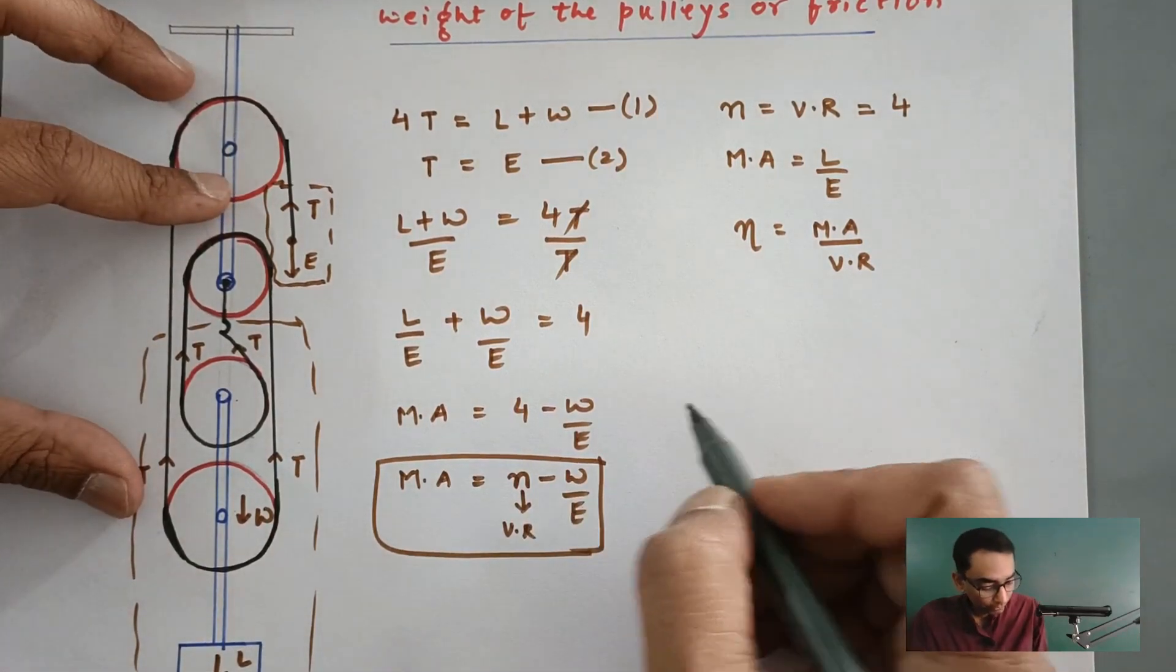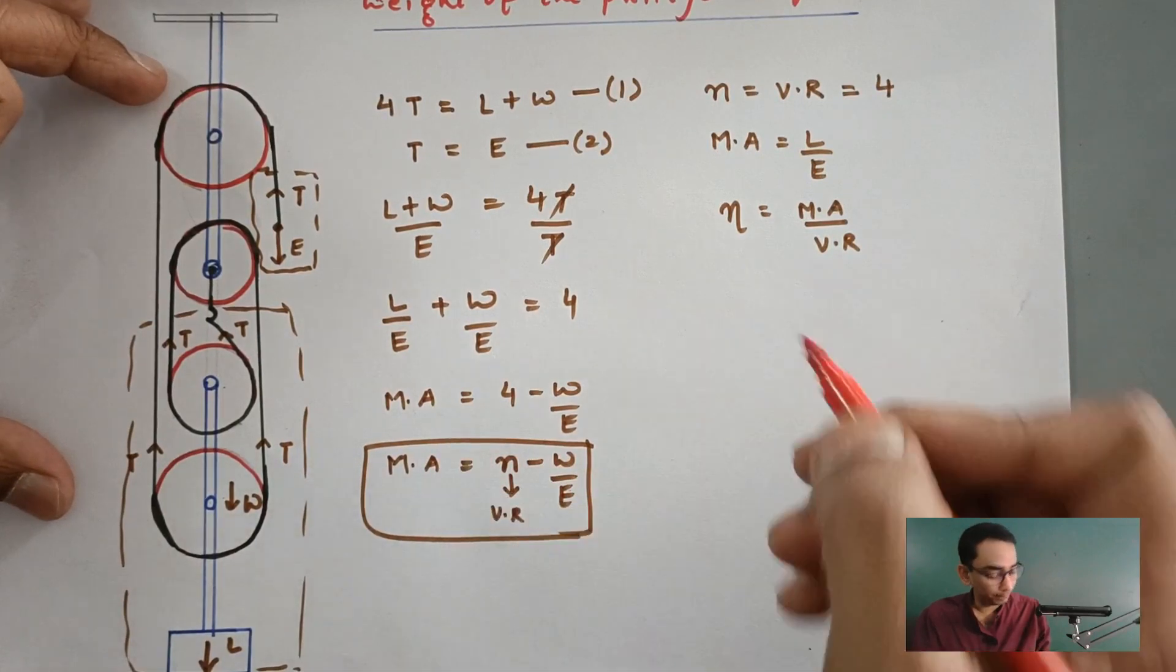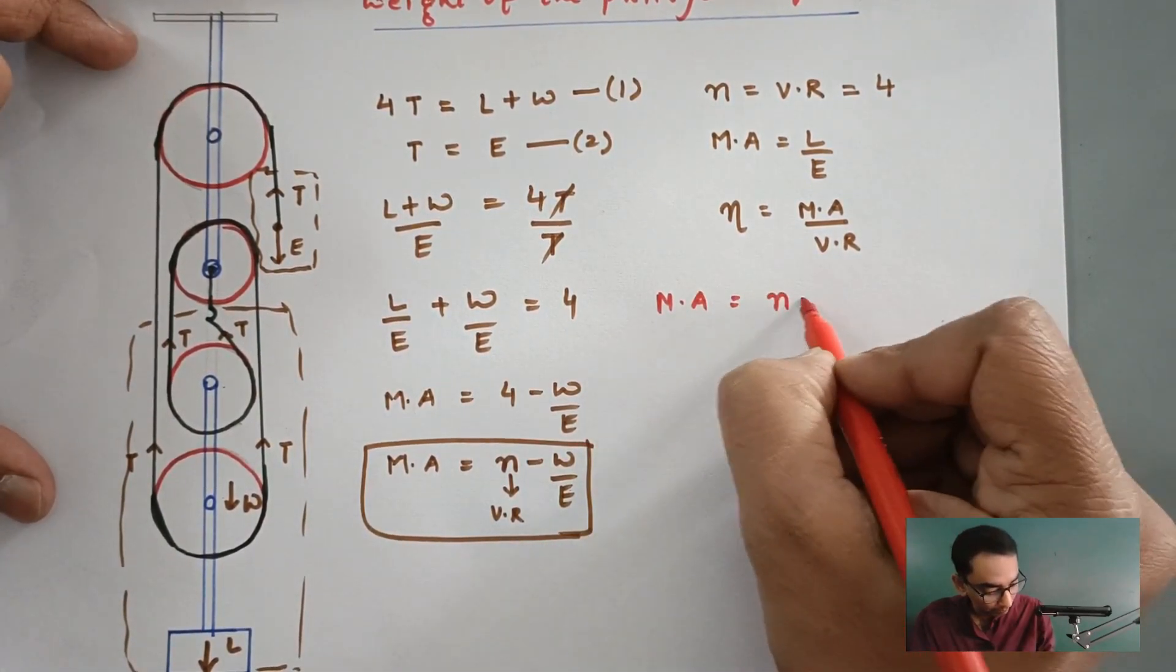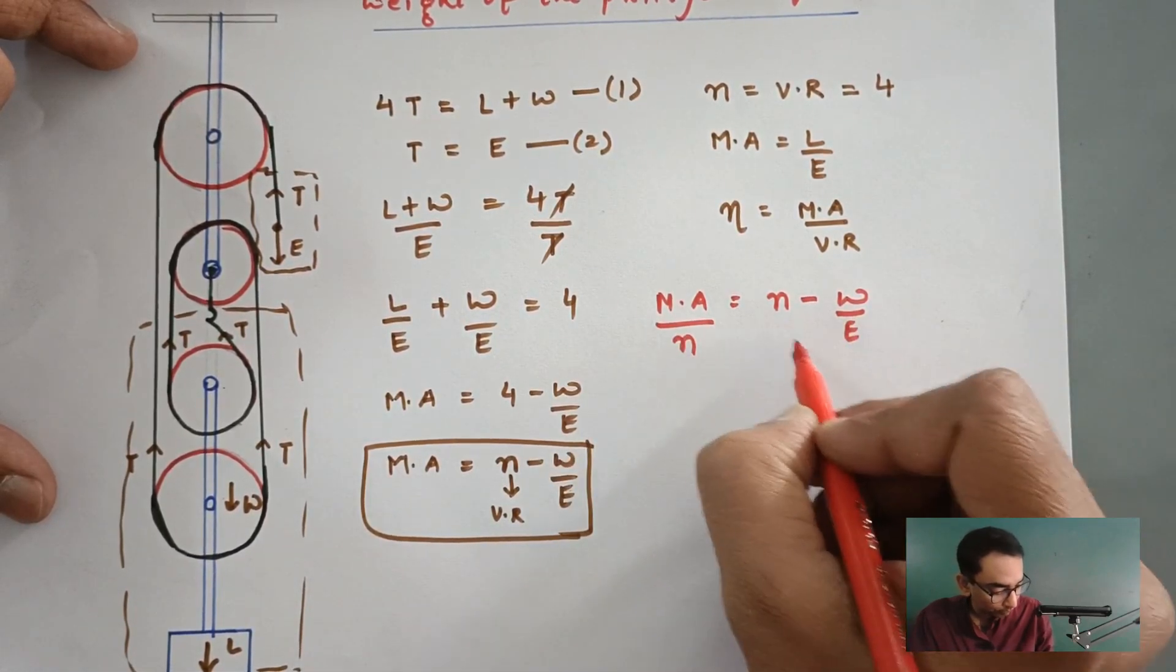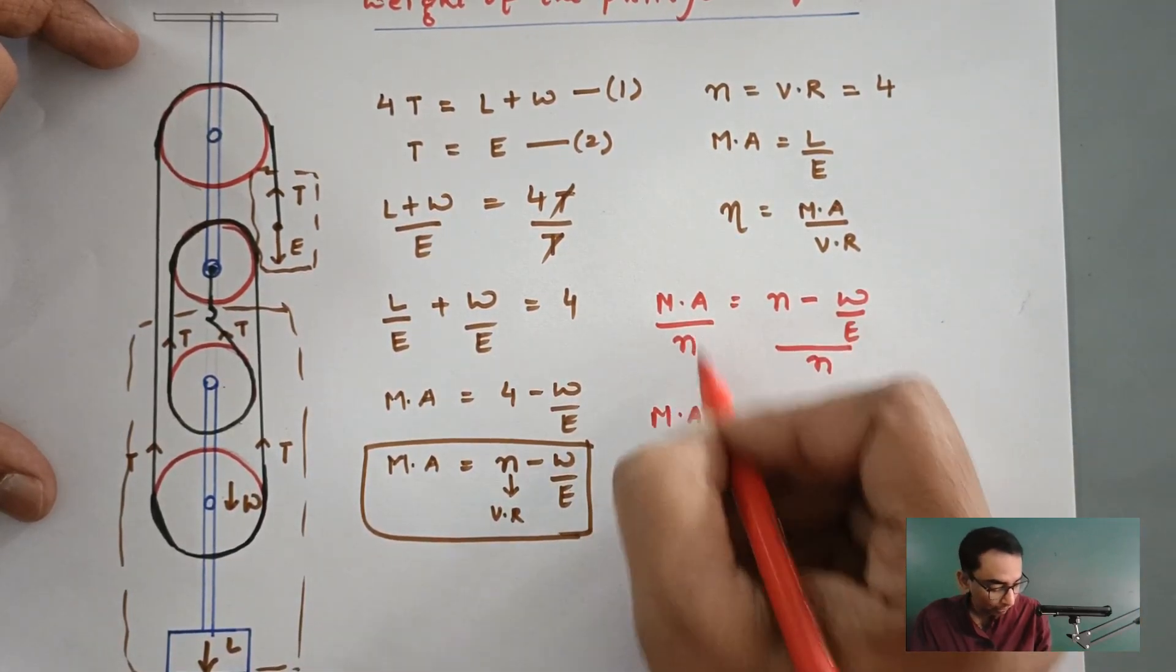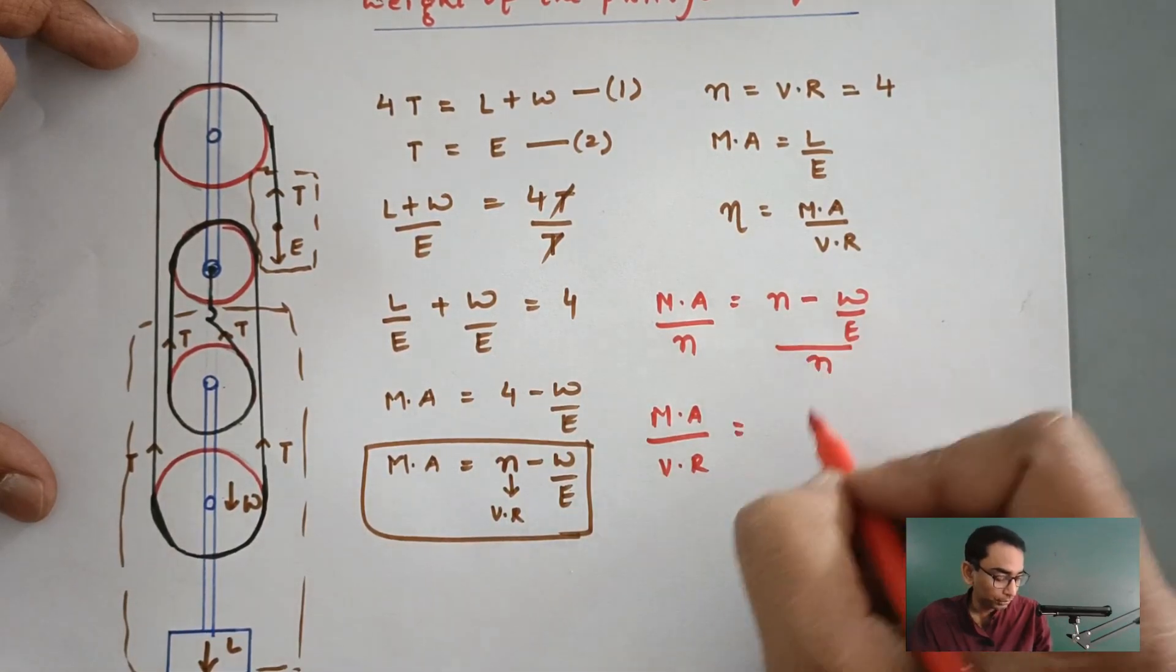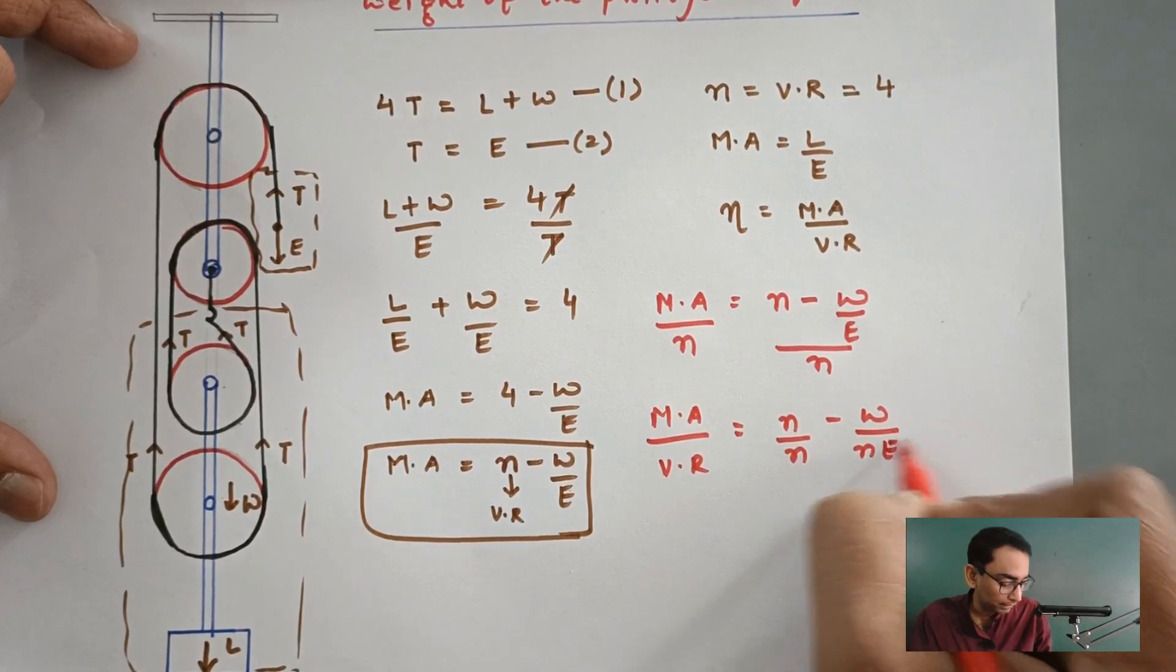Now, one more thing, we have to extend our derivation further. This relationship MA is equal to n minus W by E. I am going to divide both sides by n. So, this complete equation by n. This is MA upon n, n can also be replaced by VR. That is equal to n upon n minus W upon n times E.